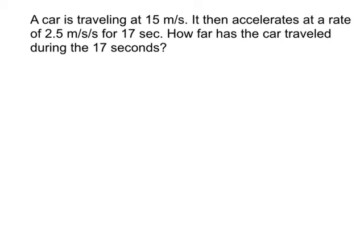The first problem: a car is traveling at 15 meters per second and then accelerates at a rate of 2.5 meters per second squared for 17 seconds. How far has the car traveled during those 17 seconds? Using our strategy, the first step is to list the variables involved.